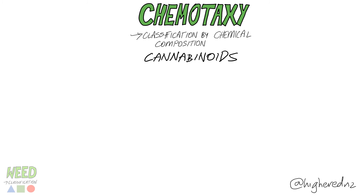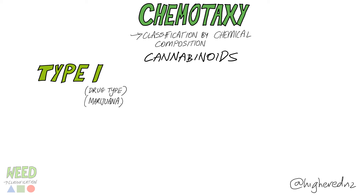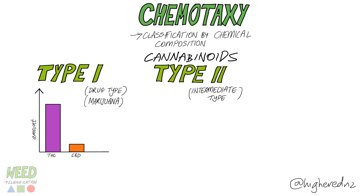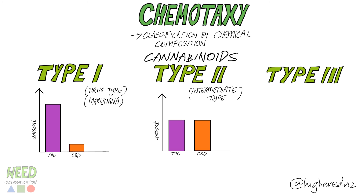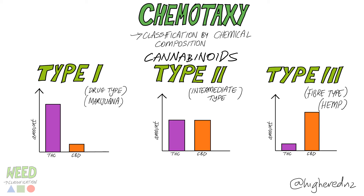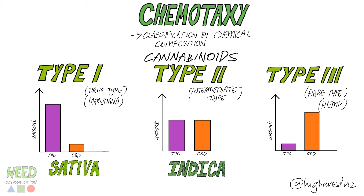That leads us to the next classification model: chemotaxonomy — the classification of cannabis based on cannabinoid composition. Type 1 is the drug type, or marijuana: high THC and low CBD. Type 2 is the intermediate type: moderate amounts of both CBD and THC. Type 3, or fiber type such as hemp, is low THC and high CBD. Type 1 looks a lot like what we call sativa today, type 2 looks like what we call indica, and type 3 looks like what we call hemp.